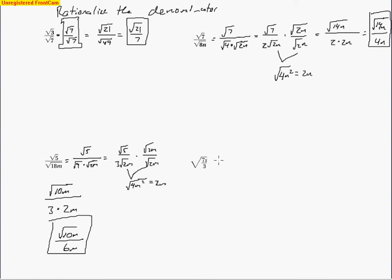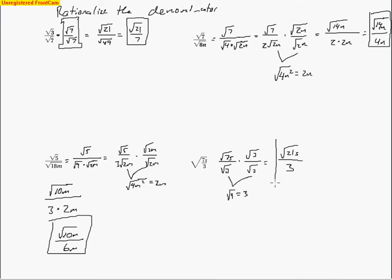On this problem, it's treated as two separate radicals: √(7s) over √3. I multiply by √3 over √3 to rationalize the denominator. That gives √(21s) all over 3, because √3 times √3 makes √9, which is 3.